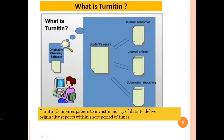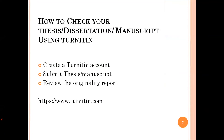Once you upload the file, Turnitin will ask you to confirm it is the correct document — you can go page by page to confirm. After submission, you can click the originality tab to see the similarity percentage. Turnitin shows different colors with different reference numbers indicating the matching sources. It also mentions from which reference the wording or text appears to have been taken. You can check each match and review accordingly.